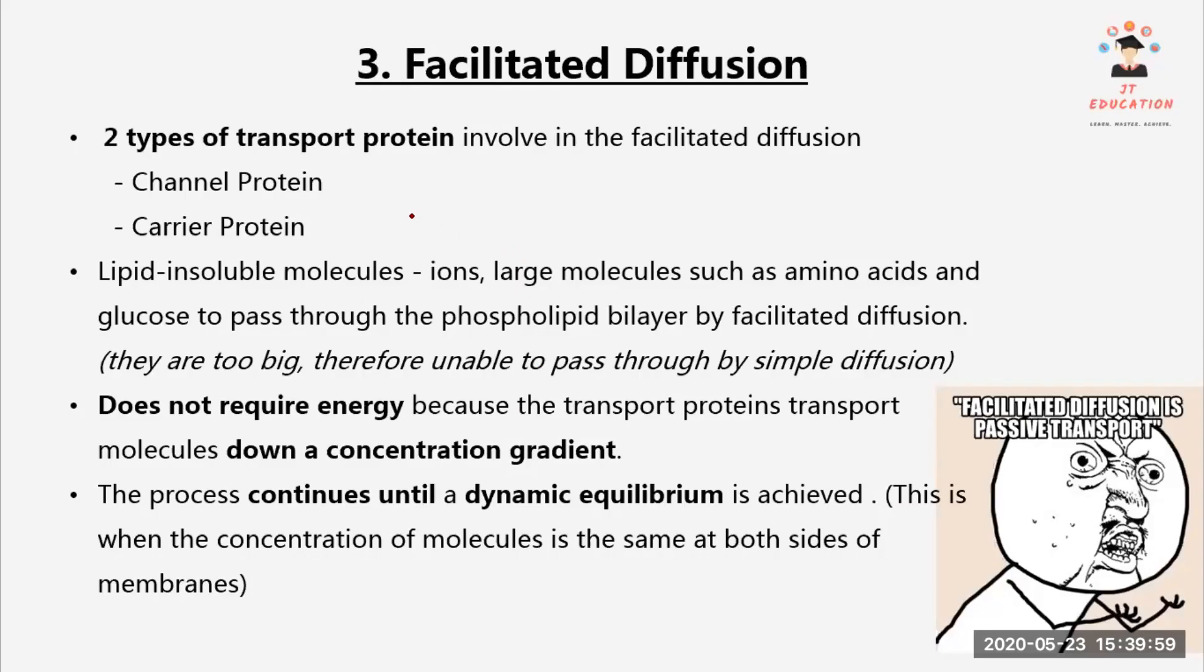There are two types of transport protein involved in facilitated diffusion. First one is a channel protein and then secondly is a carrier protein.